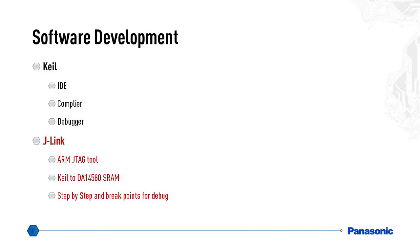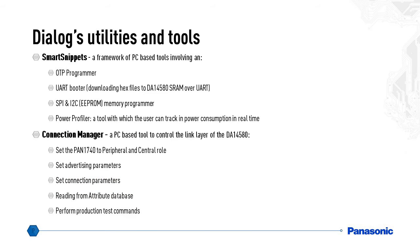The J-Link is an ARM JTAG tool that will help the user to flash the SRAM and to run applications. There are also two Dialog utilities: Smart Snippets, which allows you to program the OTP (one-time programmable memory) as well as flash the SRAM, and a tool called Connection Manager, which will be discussed at the end of this video.